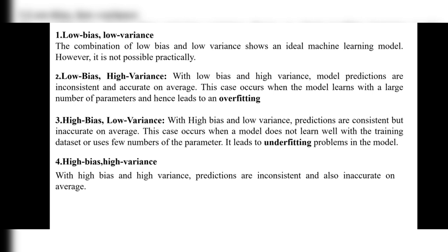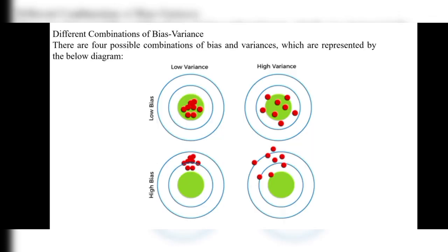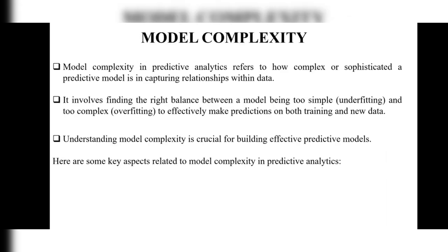The last combination is high bias and high variance, which is also inconsistent and inaccurate on average. Both low bias–low variance and high bias–high variance cannot give good solutions. Whenever they ask about bias-variance combinations, you can write these four and explain with a diagram. Next is model complexity.